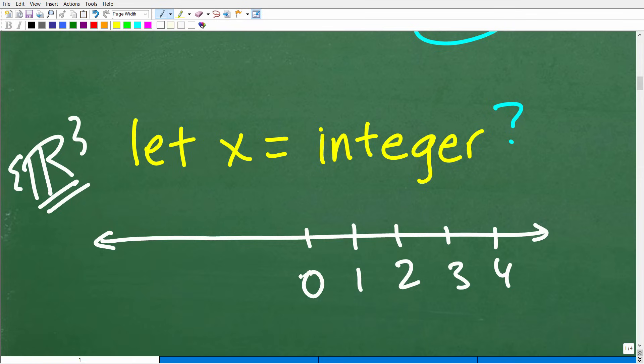Now, if we throw in zero, we have what type of numbers? Well, these numbers are called the whole numbers.